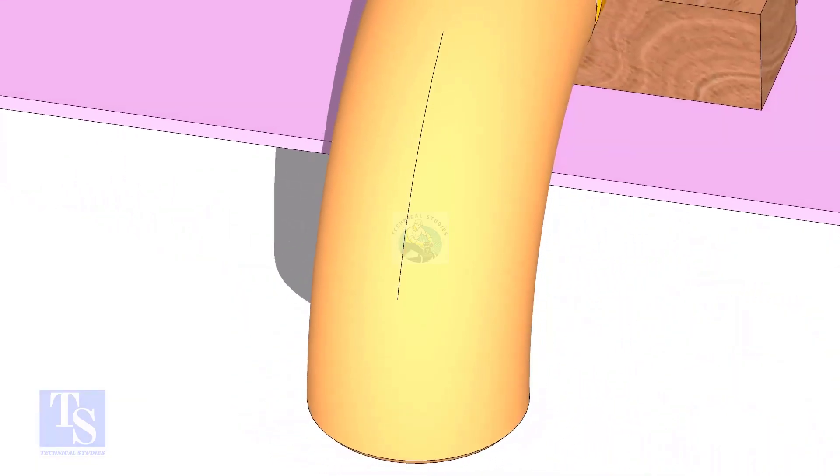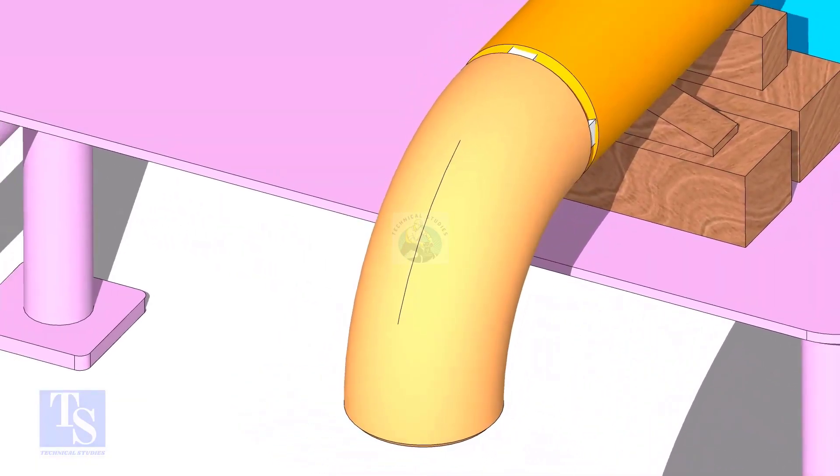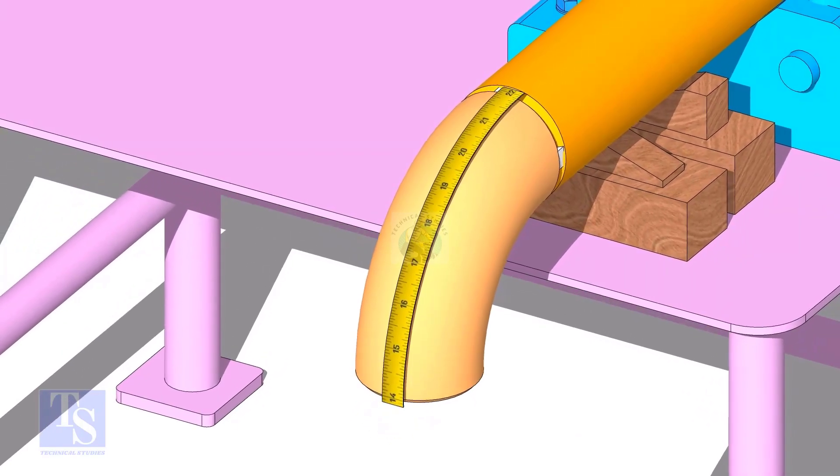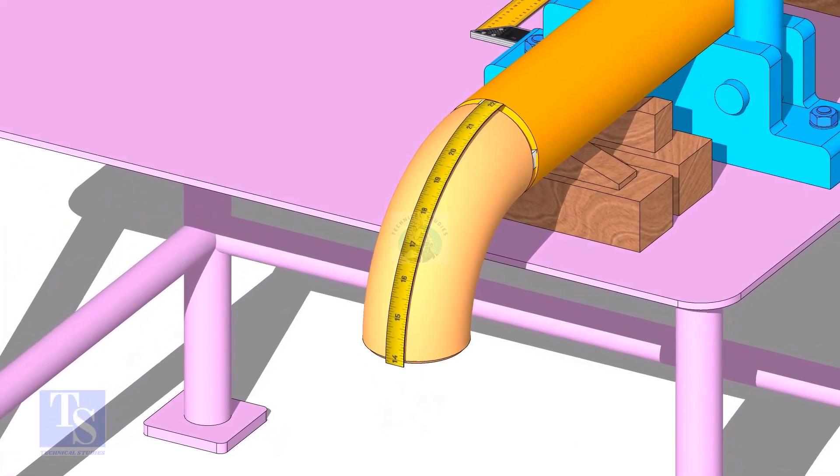Draw a line connecting these marks. Measure the outer circumference of the elbow and mark the half circumference on the center line, as shown.